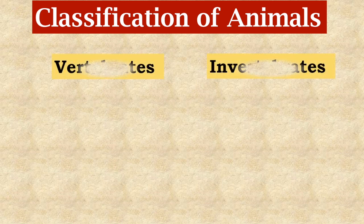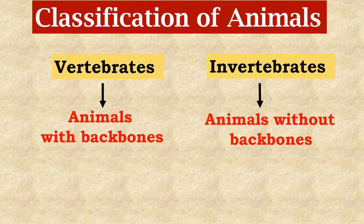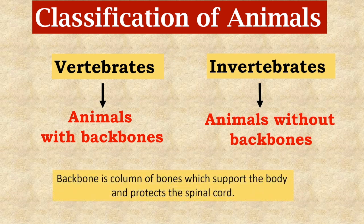While others are extremely different. Based on the similarities, the whole animal kingdom is divided into two main groups: vertebrates and invertebrates. Animals with a backbone come under the group vertebrates, while animals without a backbone are classified as invertebrates. The backbone is a column of bones which supports the body and protects the spinal cord.